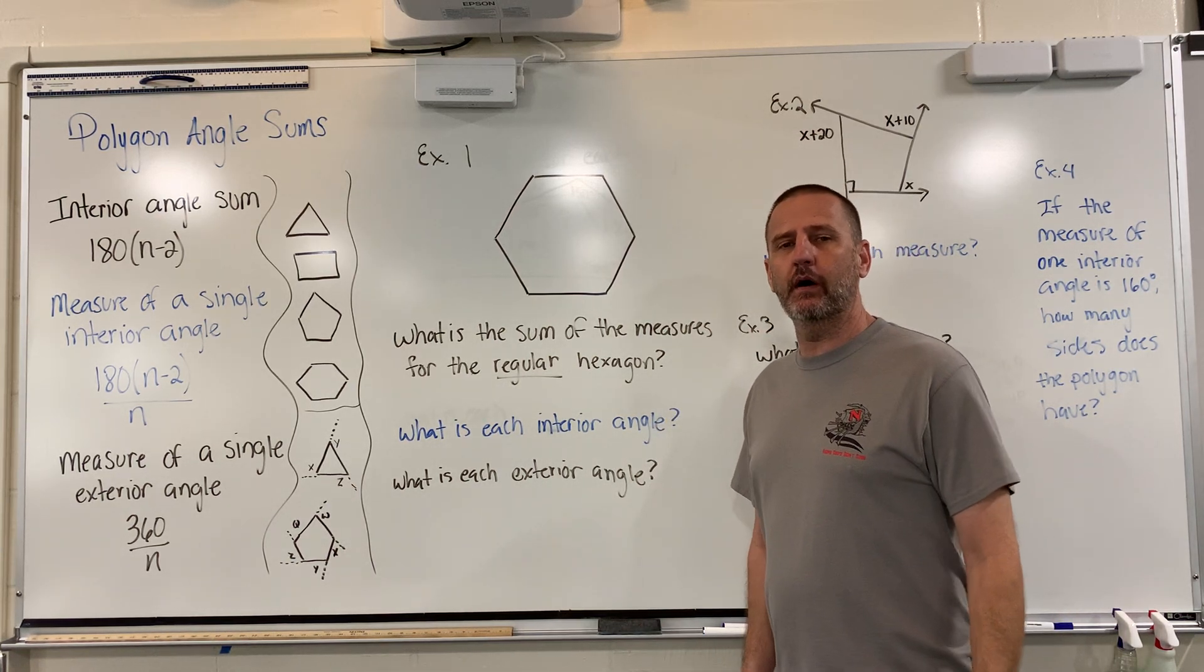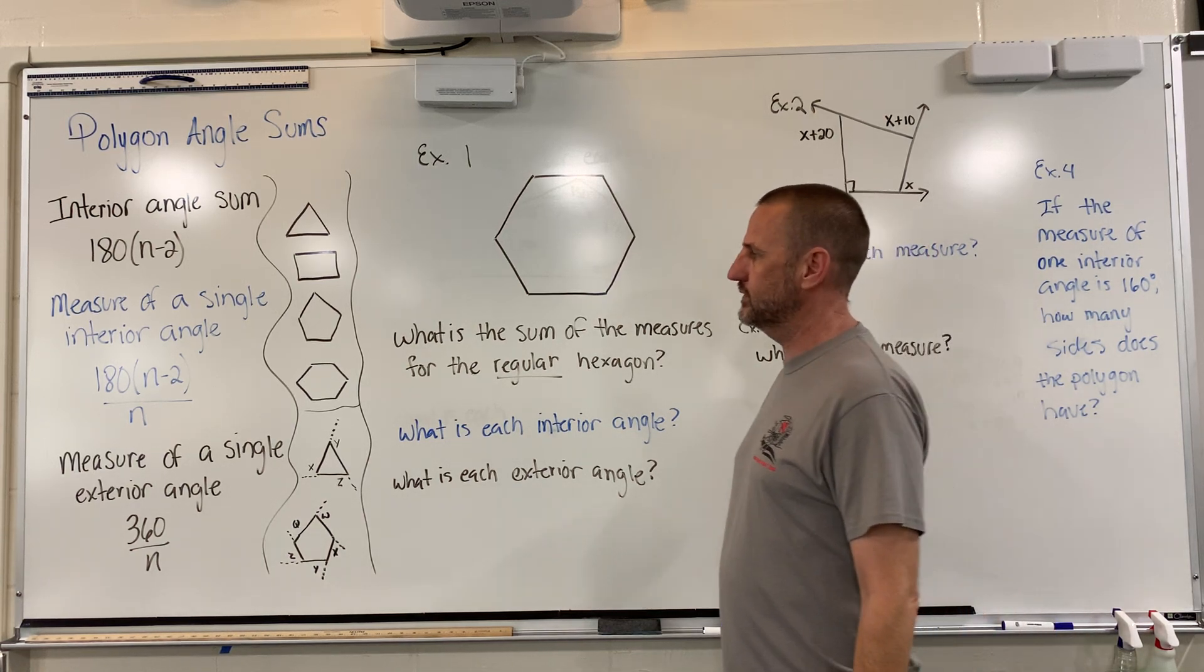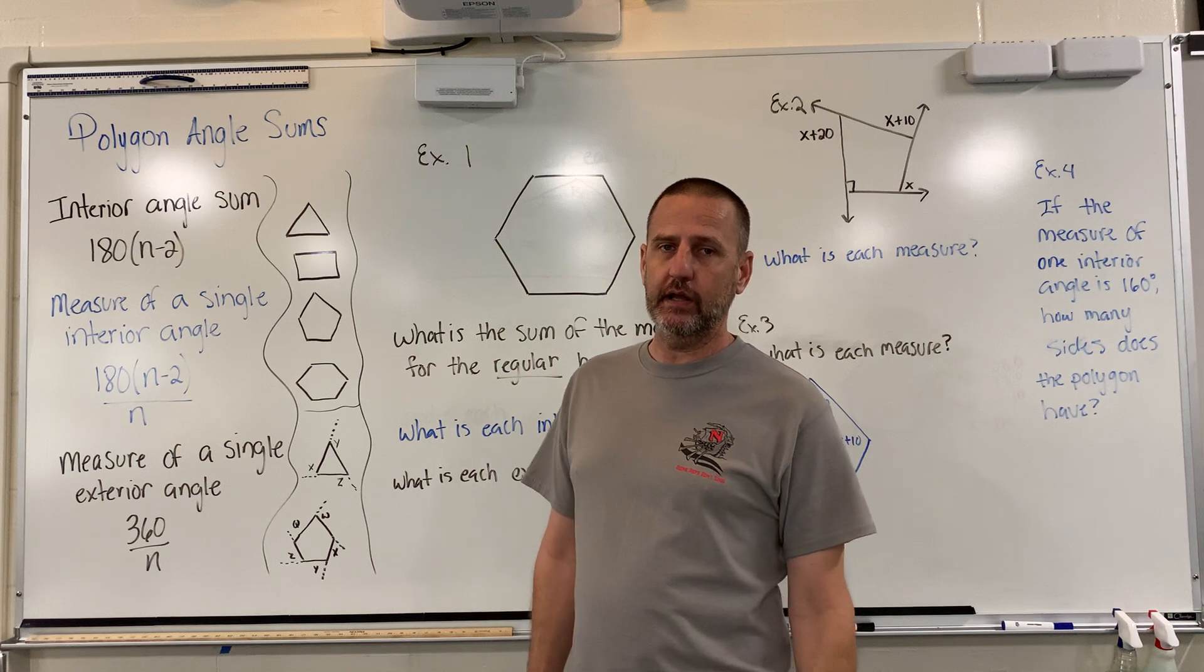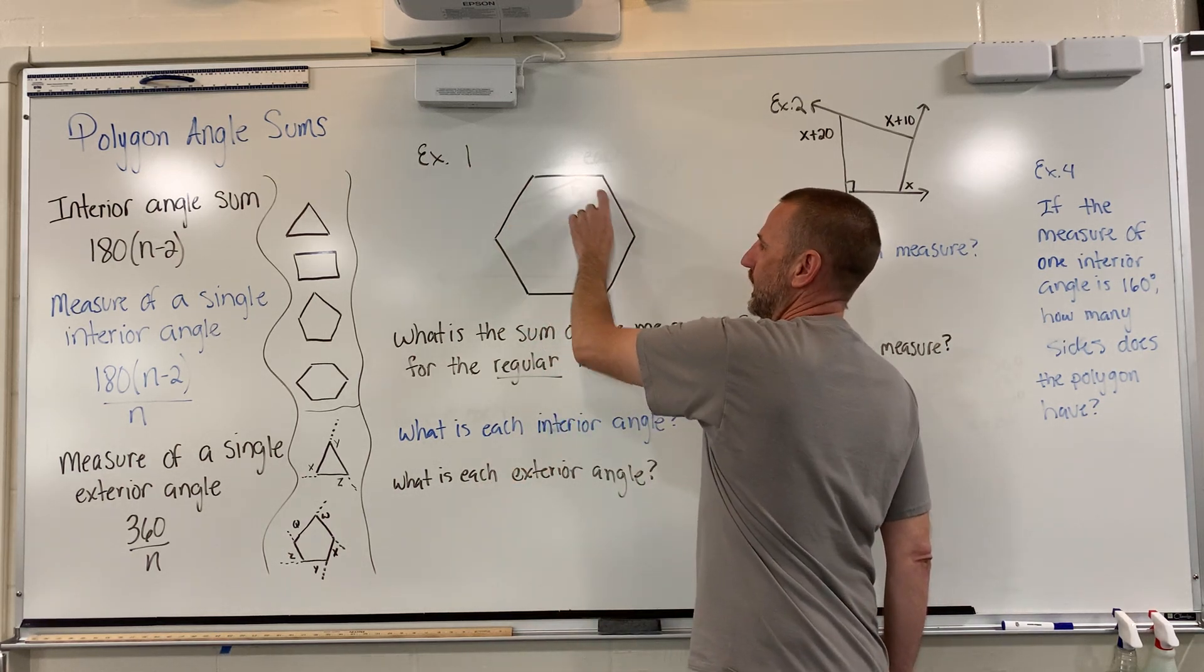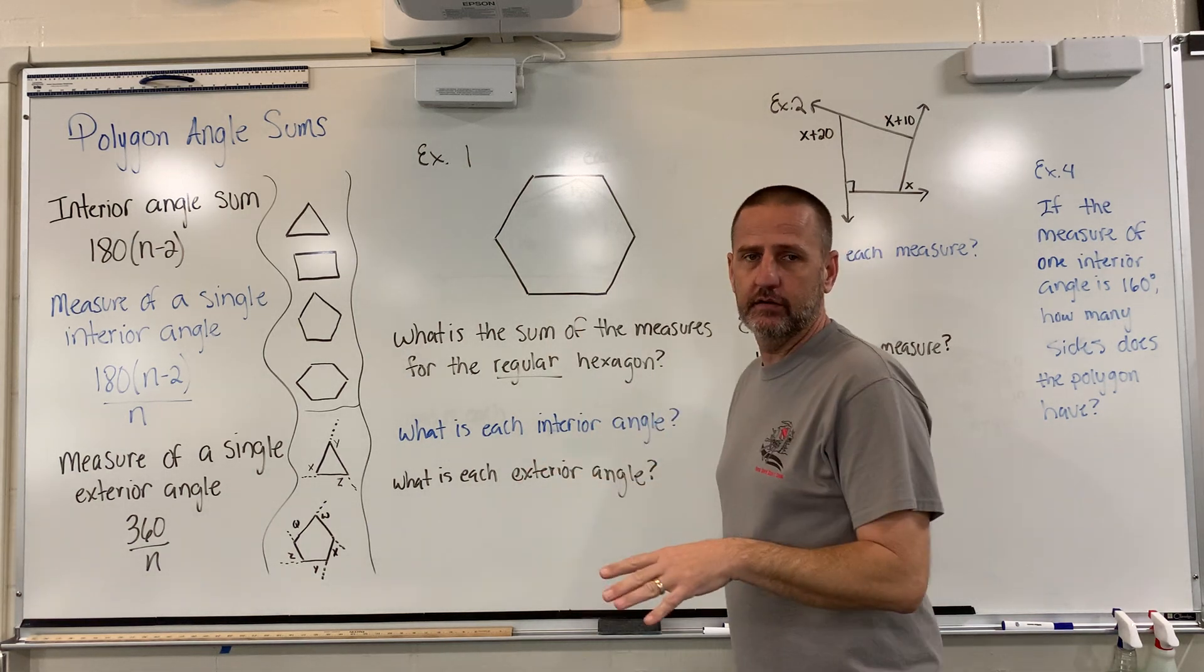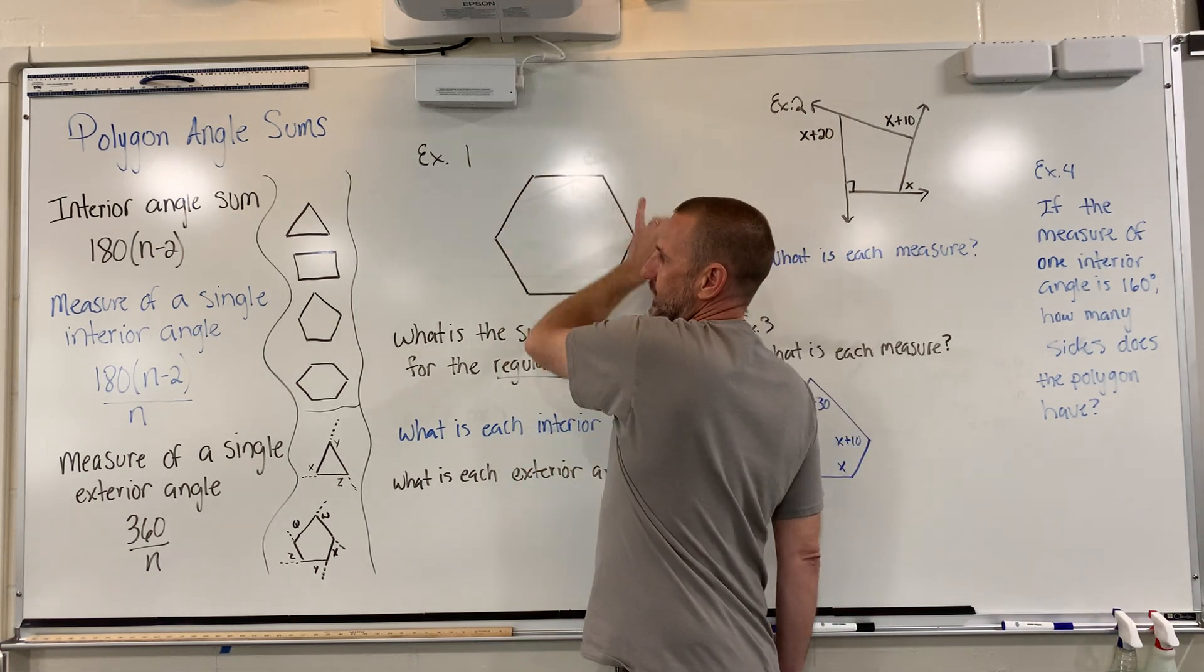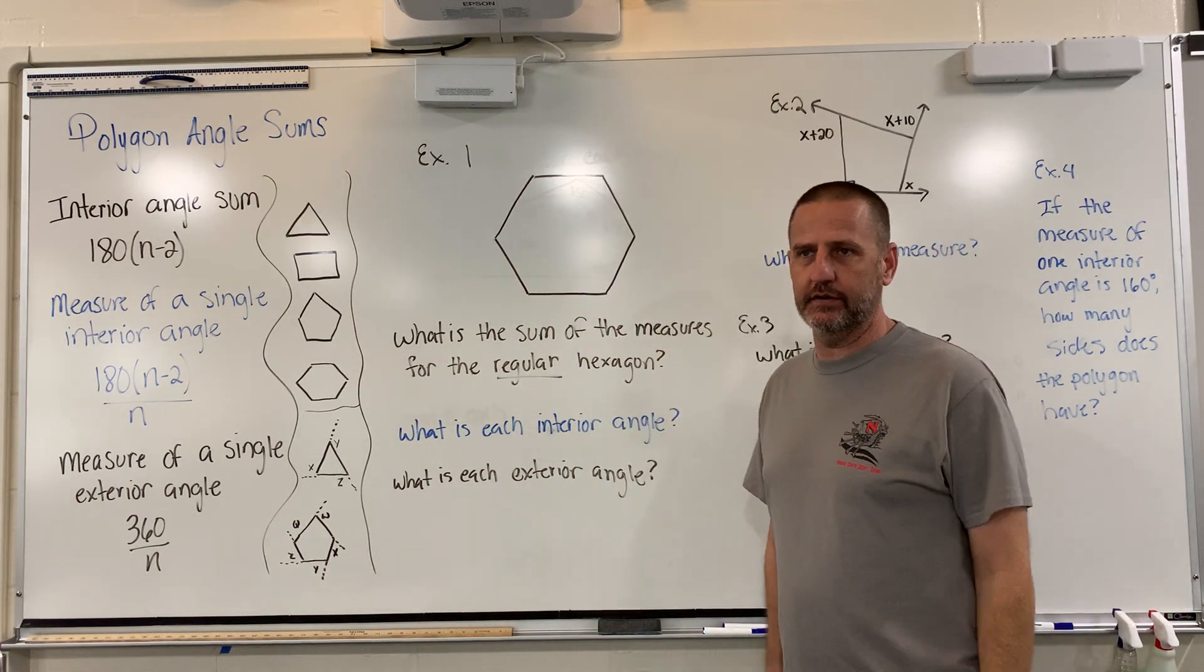So today we're going to be looking at something called polygon angle sums. And we're going to be looking at three different calculations regarding polygons. What's the total number of degrees inside of a shape or on its interior? What are the exterior angles? And then what's one specific interior angle?